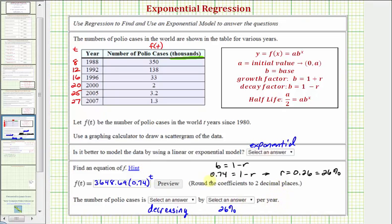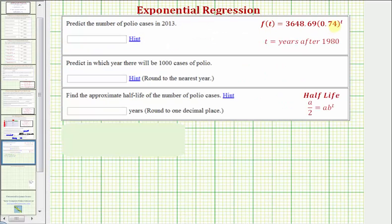And now we have three more questions based upon our model. So again, here's our exponential decay model, where t is the number of years after 1980, and the next question asks us to predict the number of polio cases in the year 2013. Let's first find the value of t that we'll use. Again, t is the number of years after 1980, so t is equal to the desired year minus the base year, so t is equal to 33.